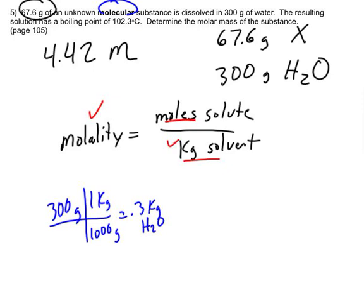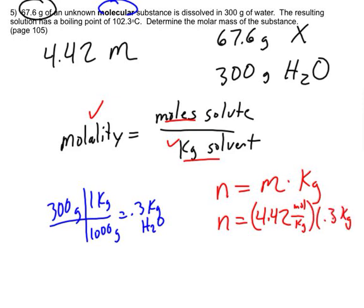So now I know this. So once again, I have an equation with only one unknown I can solve. I can find the moles of solute. So that means that my moles of solute, let's call that n. So n equals the molality times the kilograms of solvent. So n equals the molality, which is 4.42 moles per kilogram, times 0.3 kilograms.